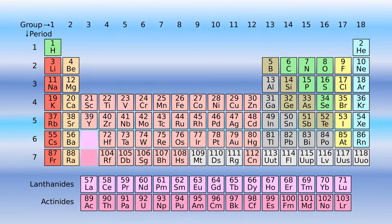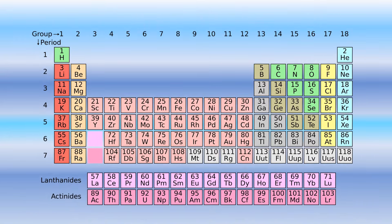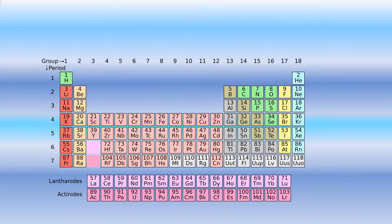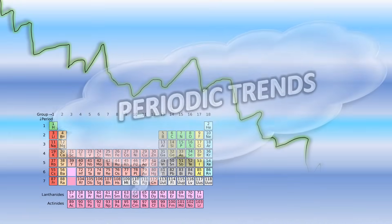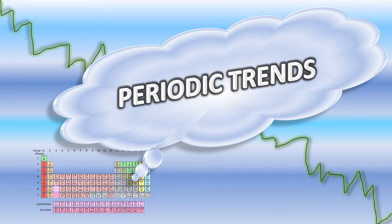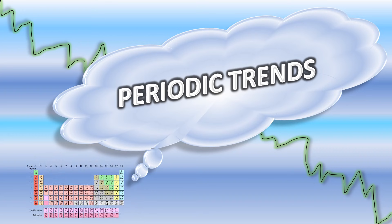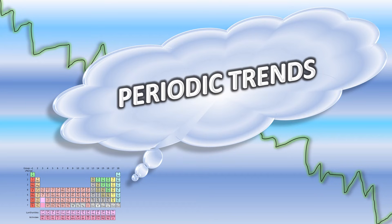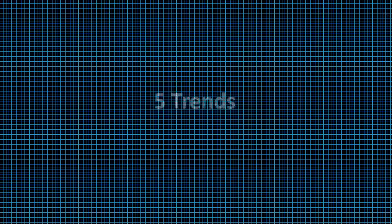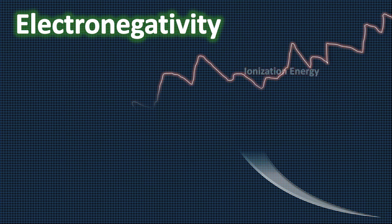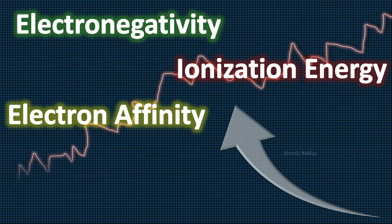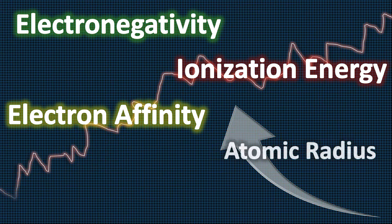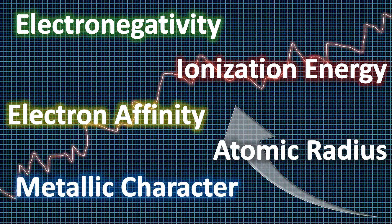The periodic trends of the periodic table are very important to know because they can help you predict the properties of an element and they can help you understand why atoms react the way they do. The most important periodic trends are electronegativity, ionization energy, electron affinity, atomic radius, and metallic character.